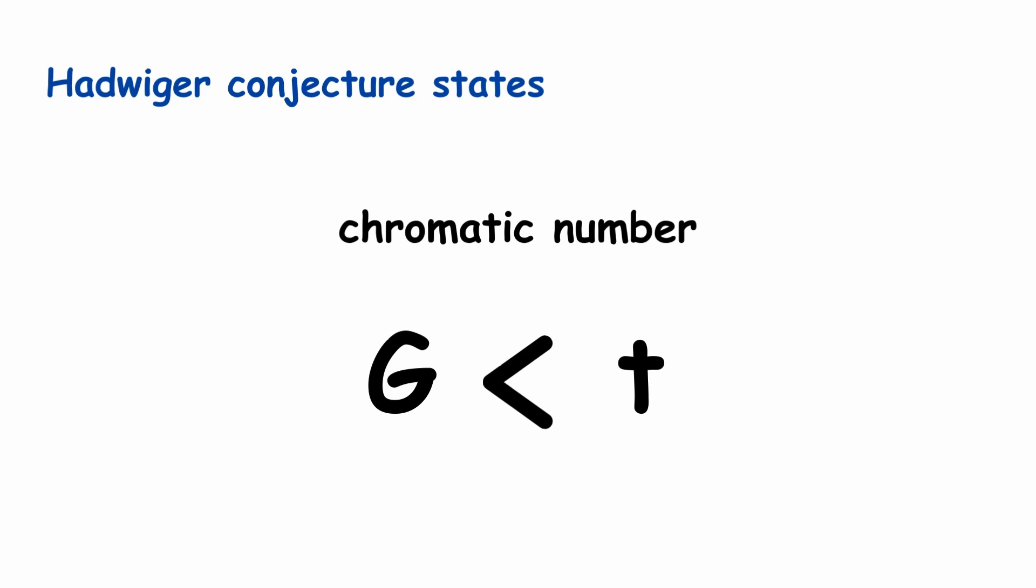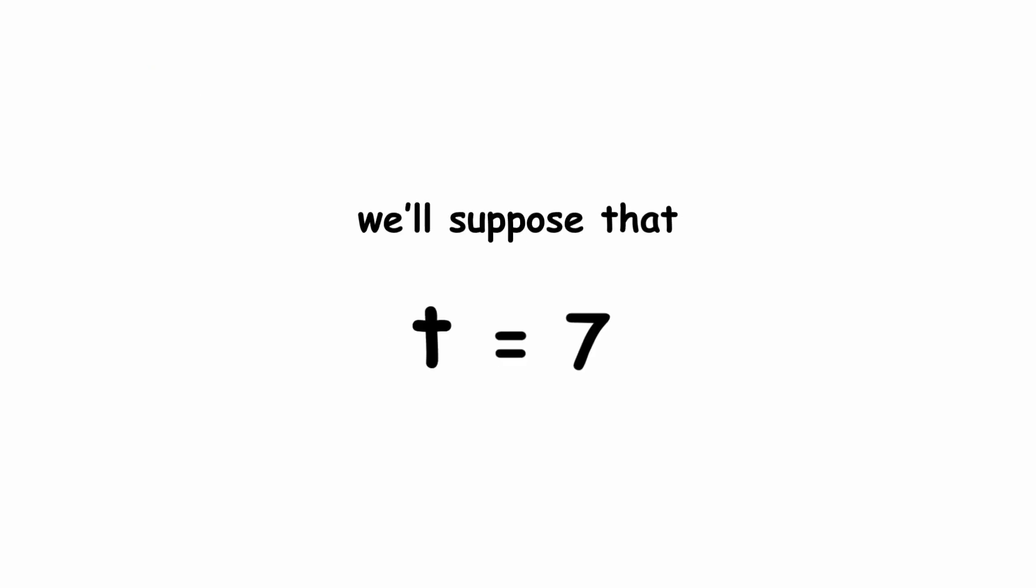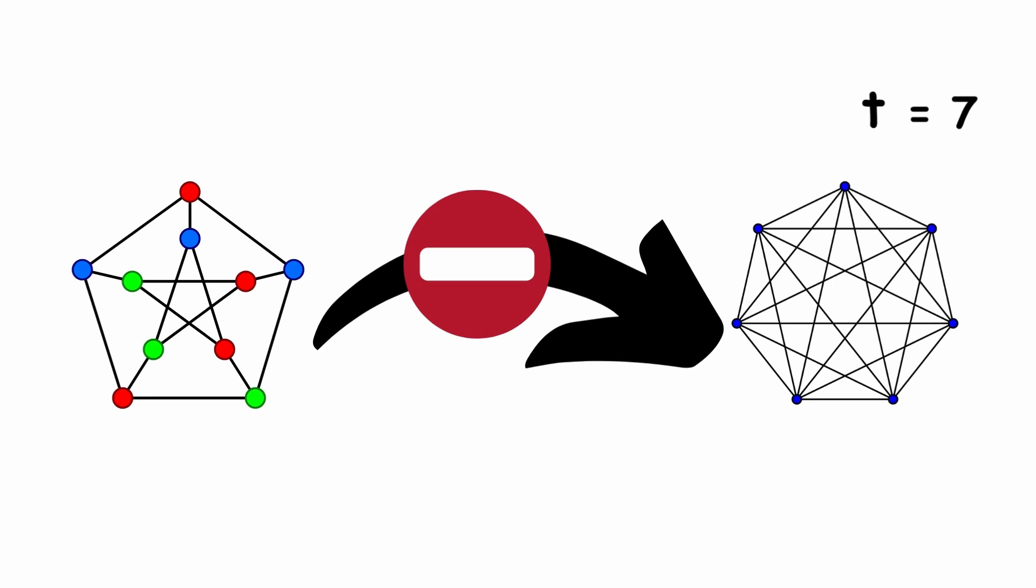As an example, we'll suppose that t is 7. That means we can't transform g into a complete graph on 7 vertices using vertex deletions, edge deletions, and edge contractions.